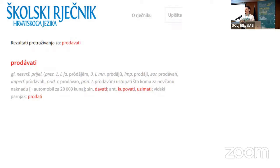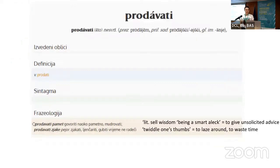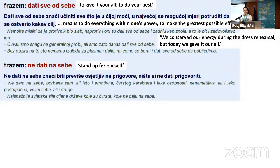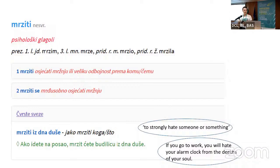Regarding verbal idioms, sometimes they are not listed in dictionaries — nouns and adjectives are, but verbal ones are not. In some dictionaries there is a phraseology field: for example, an idiom meaning 'to give unsolicited advice', and in the Croatian web dictionary also 'to give it your all' with a corpus example. The same approach is used in eGlava, which has a field for idioms and collocations with a definition and corpus example.